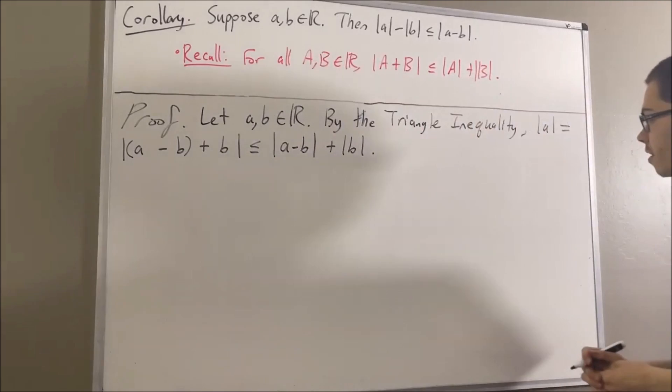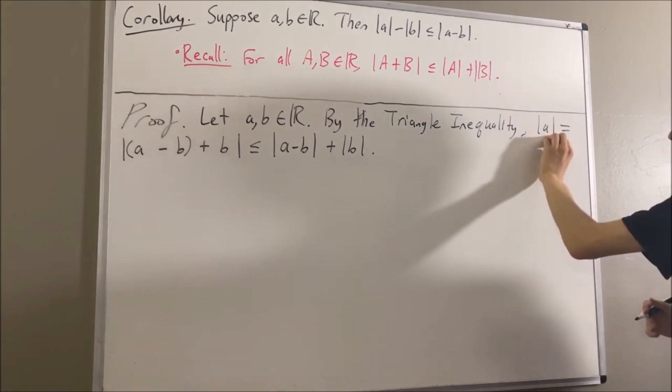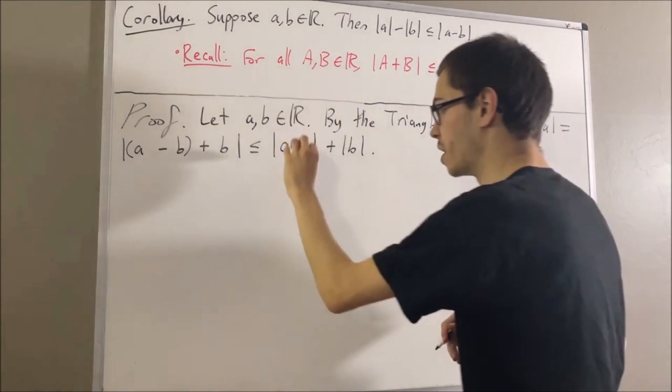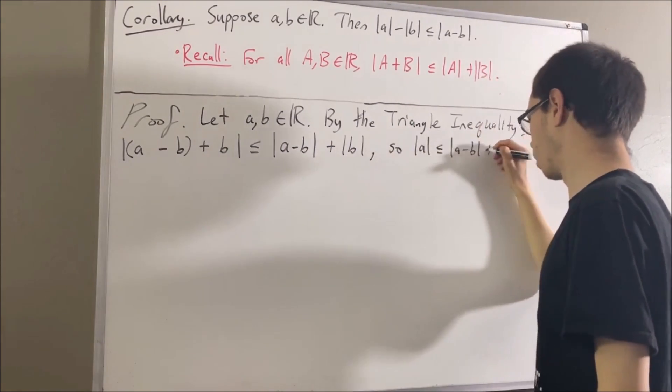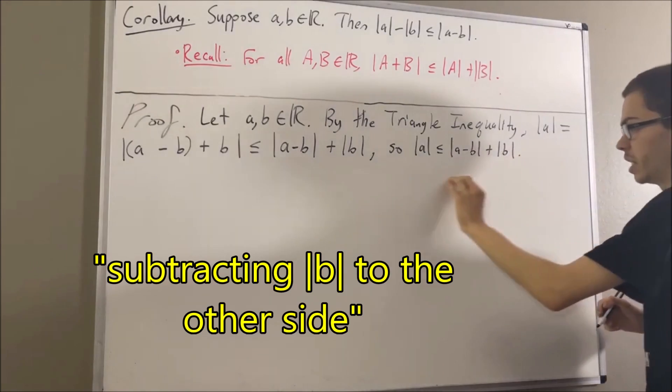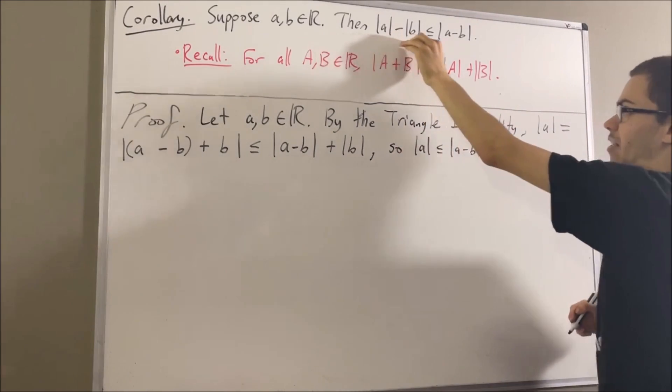So just like that, the absolute value of A is less than or equal to the absolute value of A minus B plus the absolute value of B. Subtracting the absolute value of B to the other side, we get exactly what we want.